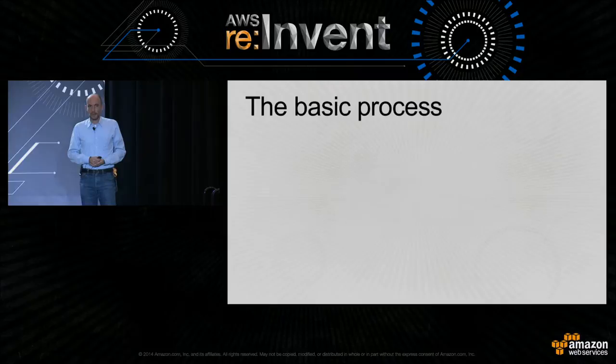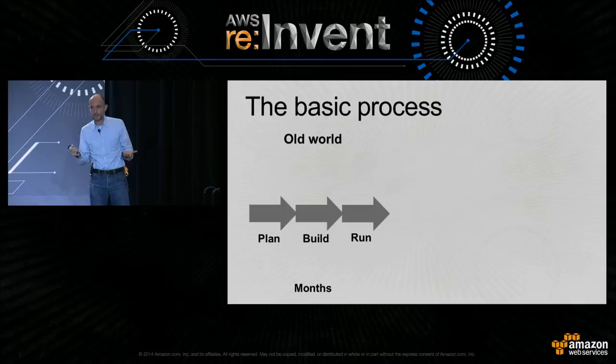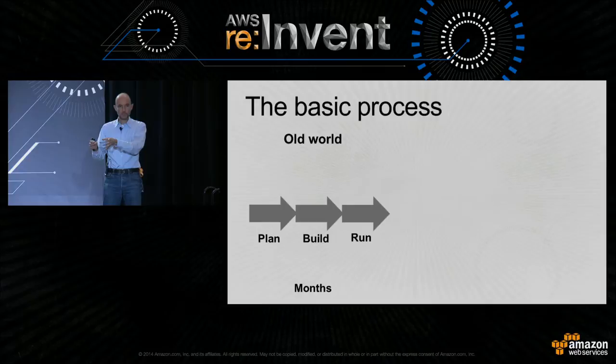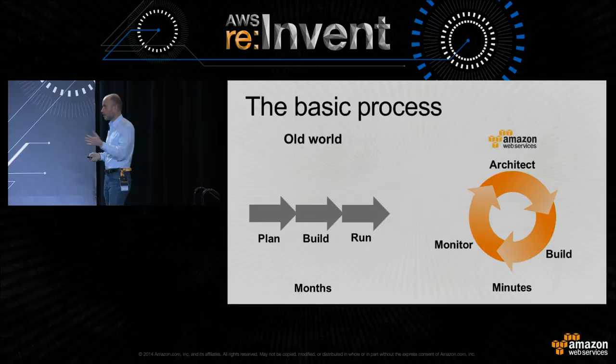When you build IT the old way, you have a cycle of plan, build, and run — each step taking months to complete. The trouble is that once something is built and running, it's very hard to change. It costs a lot of money if you make a mistake in the planning or architecture phase.